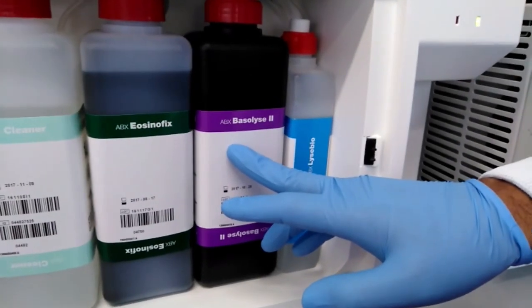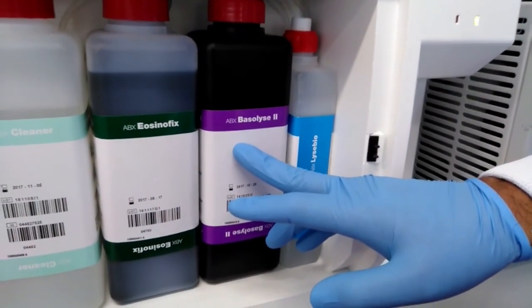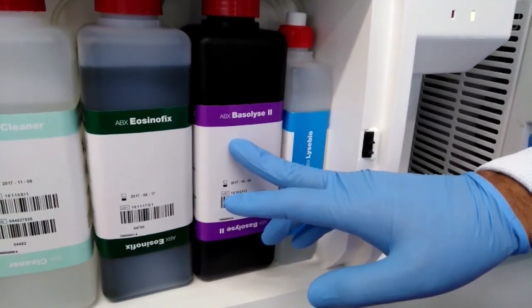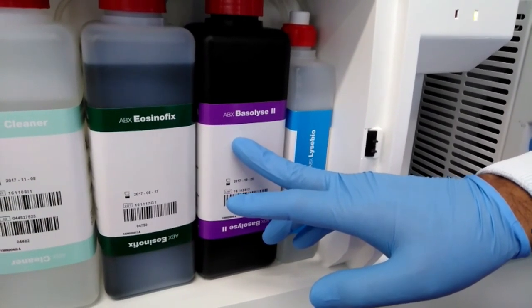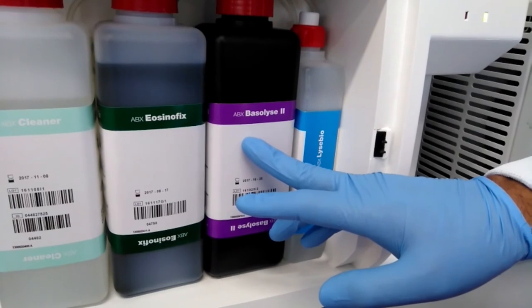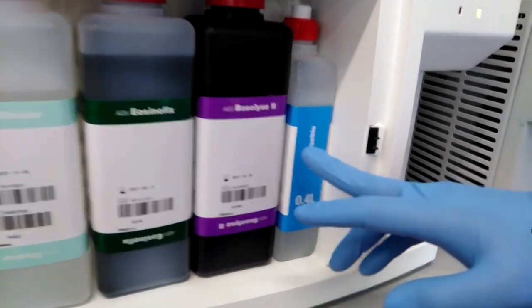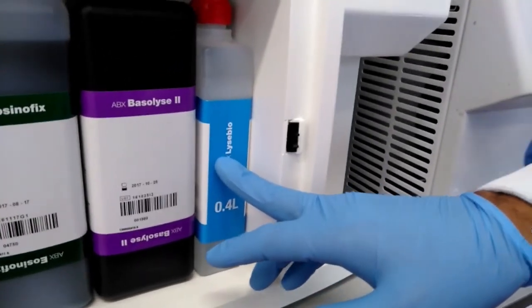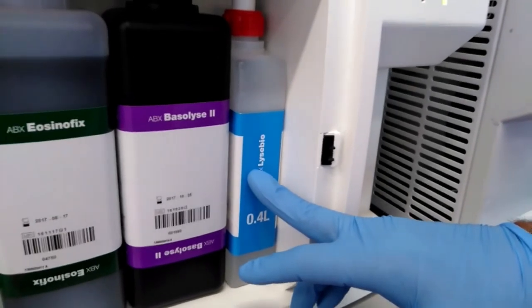It breaks down the white cell's membranes with the exception of basophils. Size differentiation between basophils and other nuclei leucocytes is done by impedance. And finally, lice bio is used to lyse red cells and determine hemoglobin concentration.